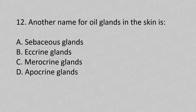Question 12: Another name for the oil gland in the skin is: Option A: sebaceous gland. Option B: eccrine gland. Option C: merocrine gland. Option D: apocrine gland. The answer is Option A: sebaceous gland.